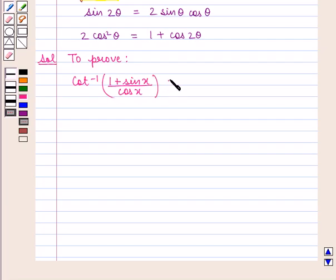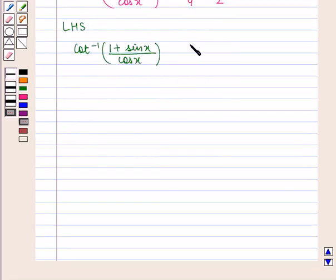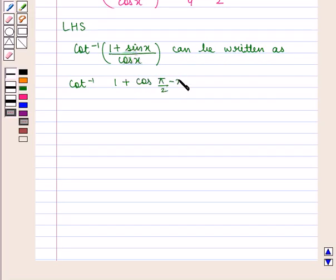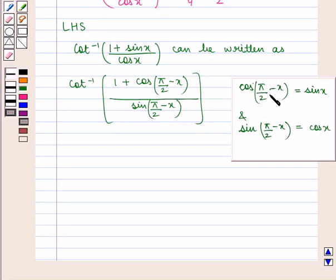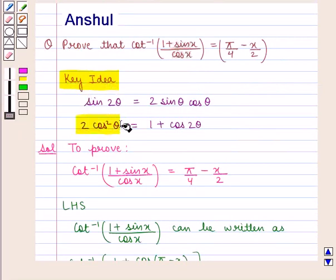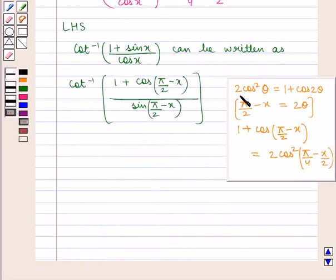We need to prove that cot inverse of (1 plus sin x) upon cos x is equal to pi by 4 minus x by 2. Taking the left hand side, we have cot inverse of (1 plus sin x) whole upon cos x, which can be written as cot inverse of (1 plus cos(pi by 2 minus x)) whole upon sin(pi by 2 minus x), since cos(pi by 2 minus x) equals sin x and sin(pi by 2 minus x) equals cos x.